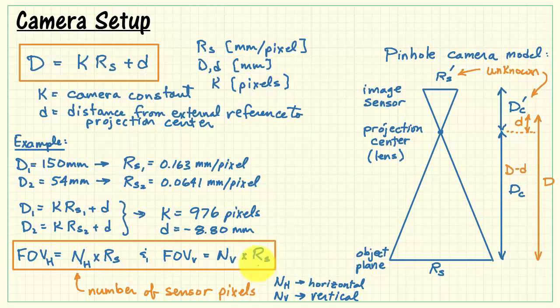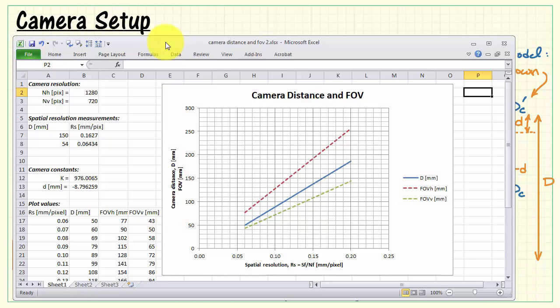Those two values, n sub h and n sub v, are properties of the camera. If we assume that we've got square pixels, which is generally the case, then we use the spatial resolution for each.